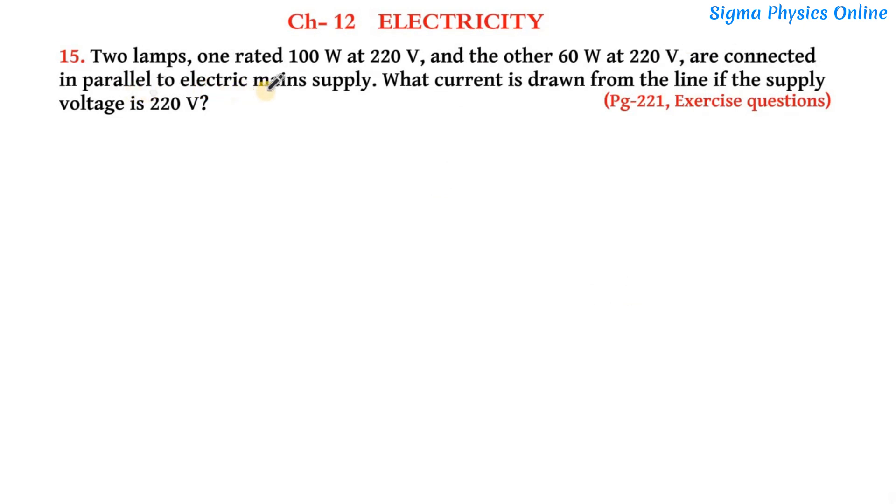220 volt are connected in parallel to electric mains supply. What current is drawn from the line if the supply voltage is 220 volt? Alright, so let's understand this question through this circuit diagram. We should always draw the